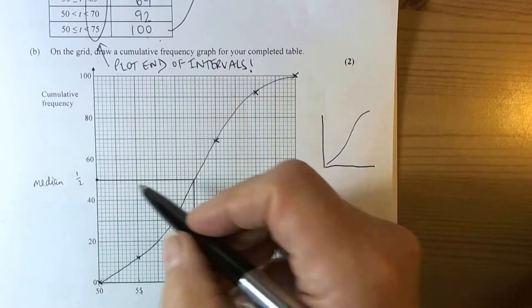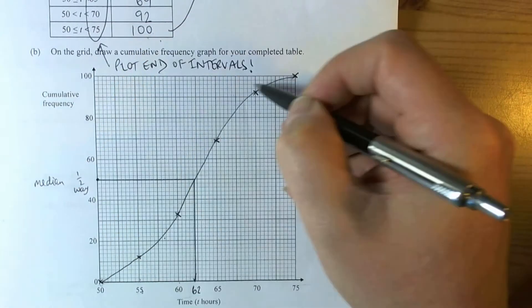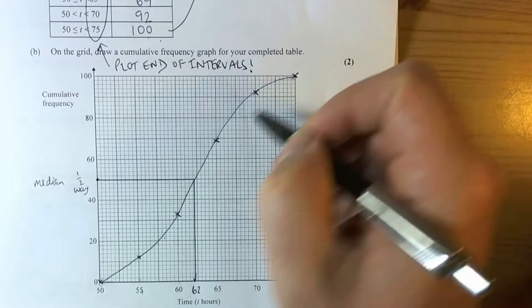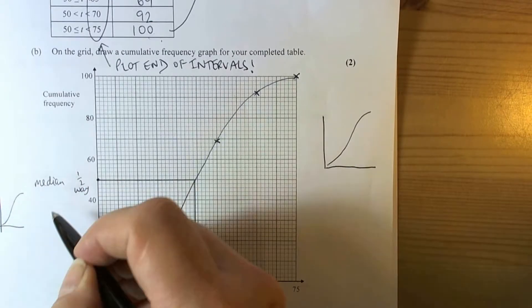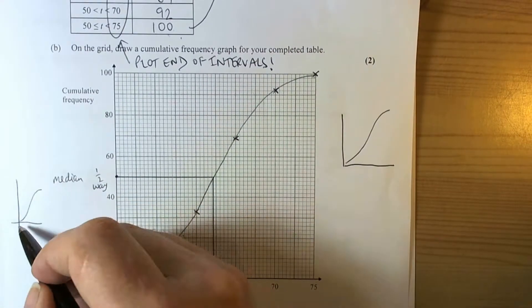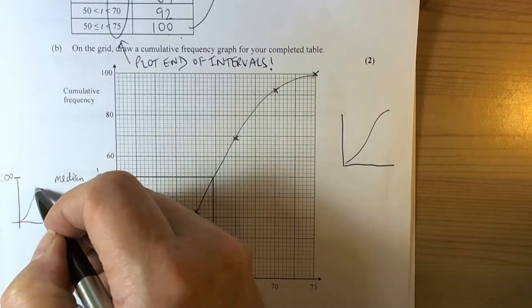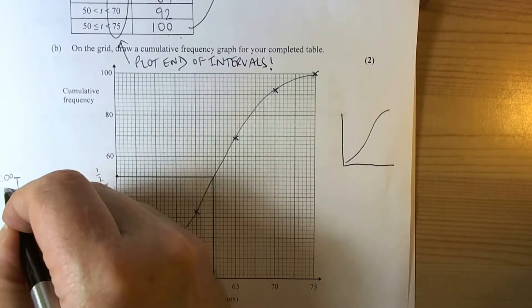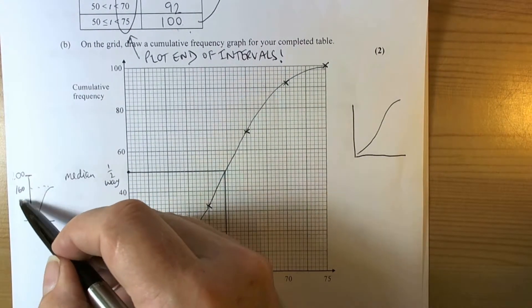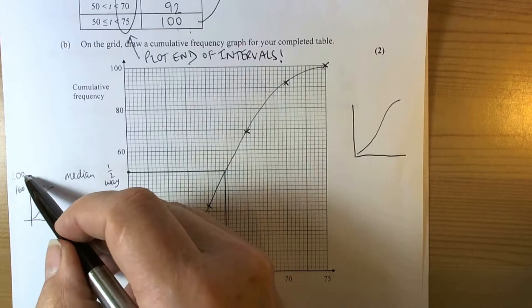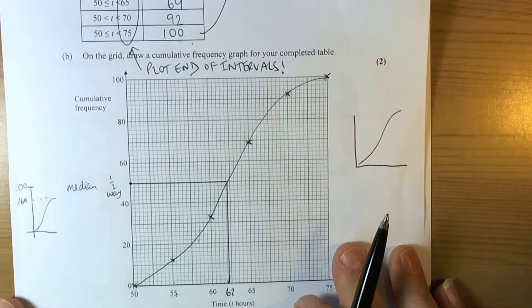The median is halfway up, but be careful: sometimes the graph scale might go to 200 but the cumulative frequency itself only reaches 160. It's always halving the total cumulative frequency, not the scale of the graph they give you. So we've got to be careful of that one.